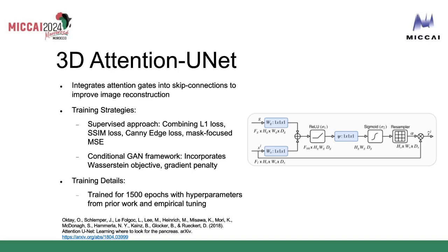For conditional GANs we used the same loss function for training the model, in addition to a simple encoder model with a conditional GANs loss function. In our case we used the Wasserstein objective with gradient penalty to train the conditional GANs. Both frameworks were trained for 1,500 epochs, and hyperparameters were used from previous work and our own empirical testing.